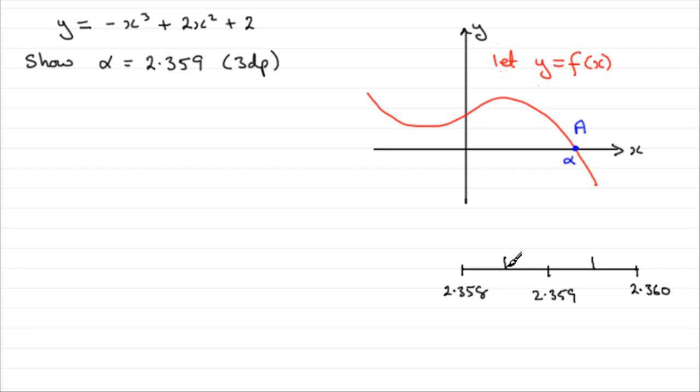So the lower bound, if you like, is going to be the value halfway between 2.358 and 2.359, which is going to be 2.3585. And the upper bound here, well, that's going to be 2.3595.